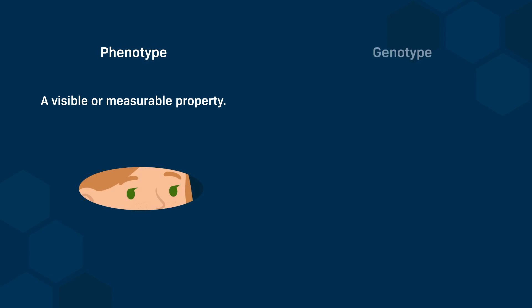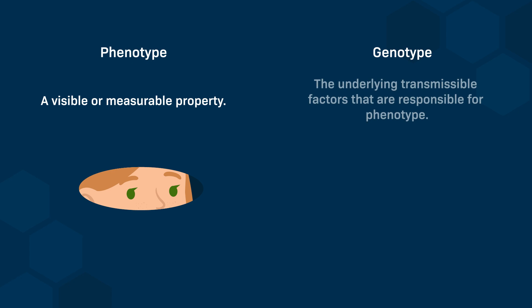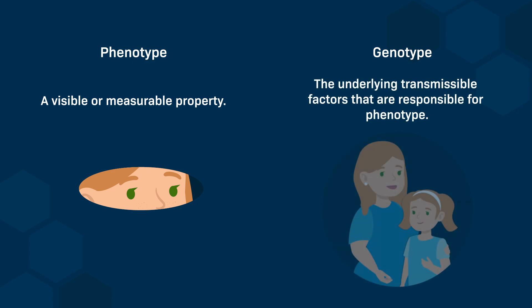The second is genotype, which is the set of alleles possessed by an organism. This is the underlying genetic makeup that we can infer from the phenotype, and is responsible for creating the observable phenotype.